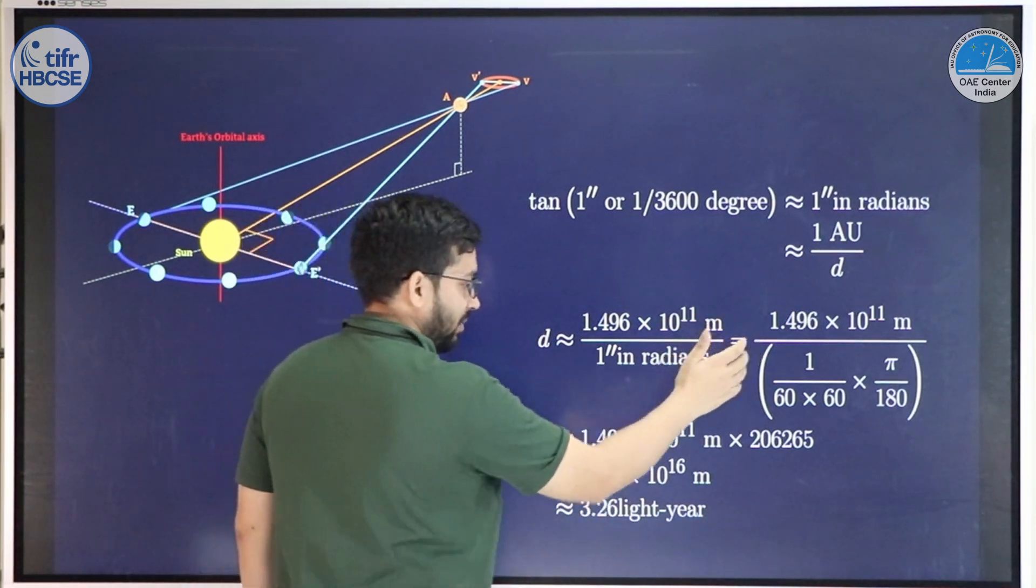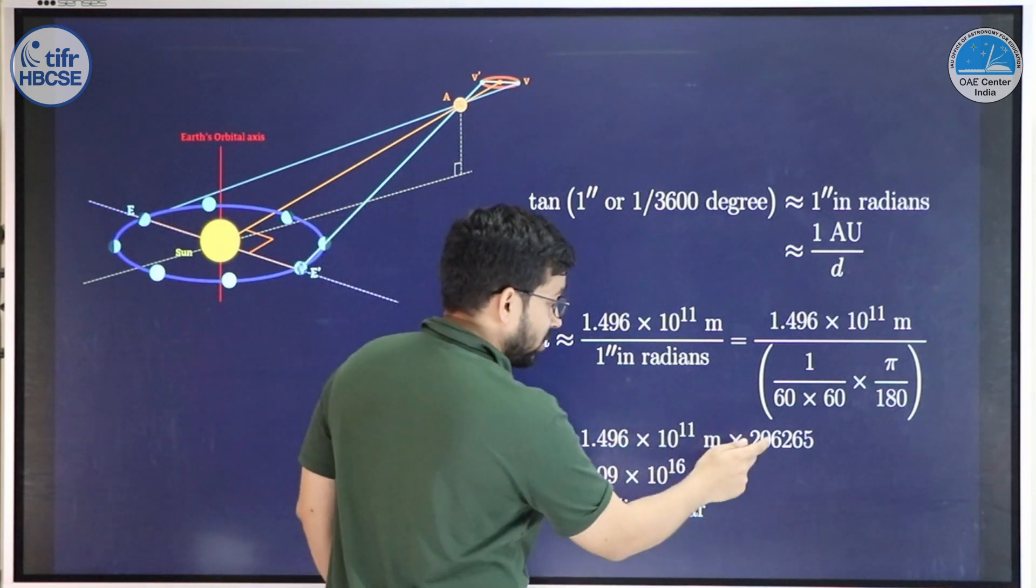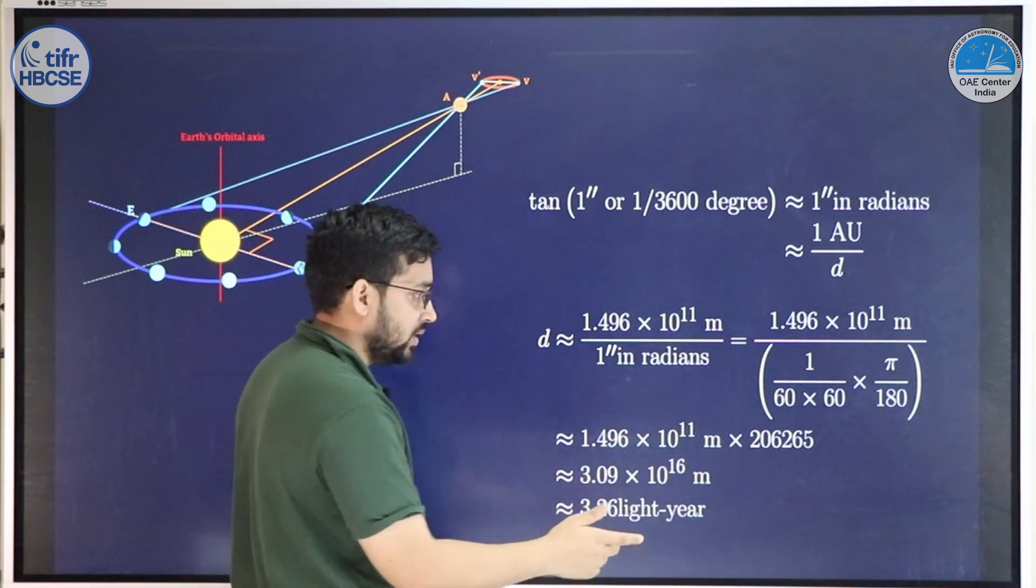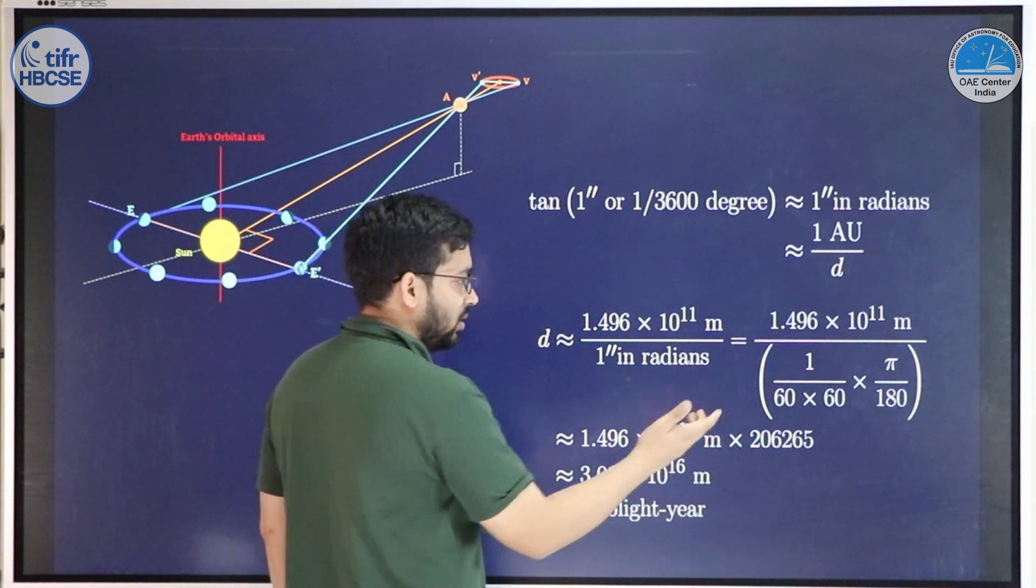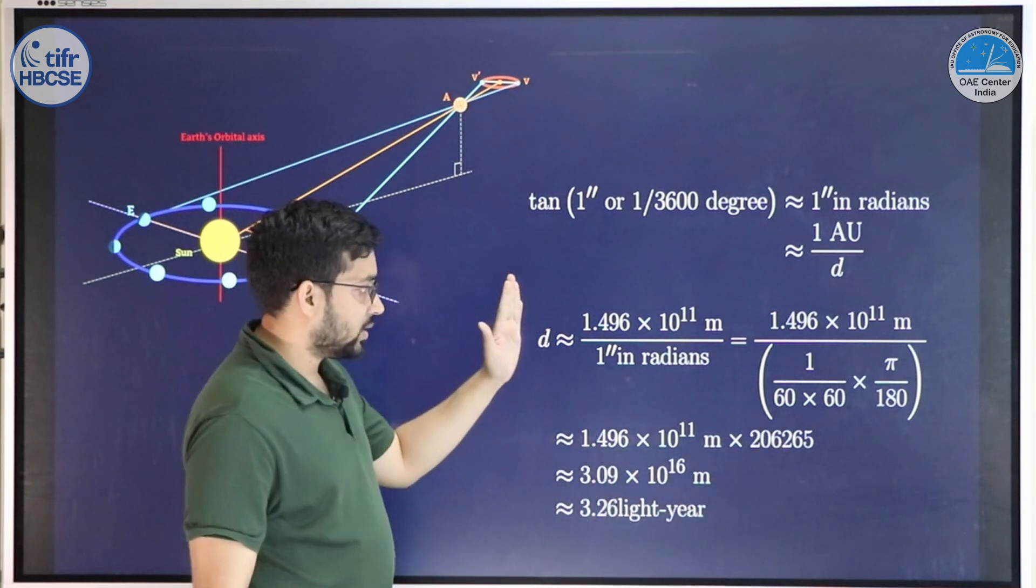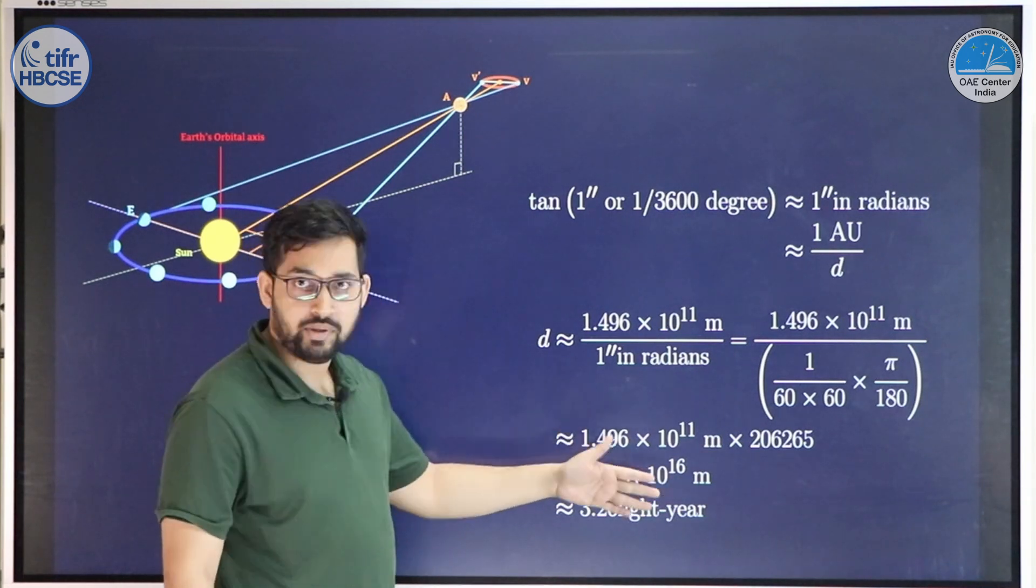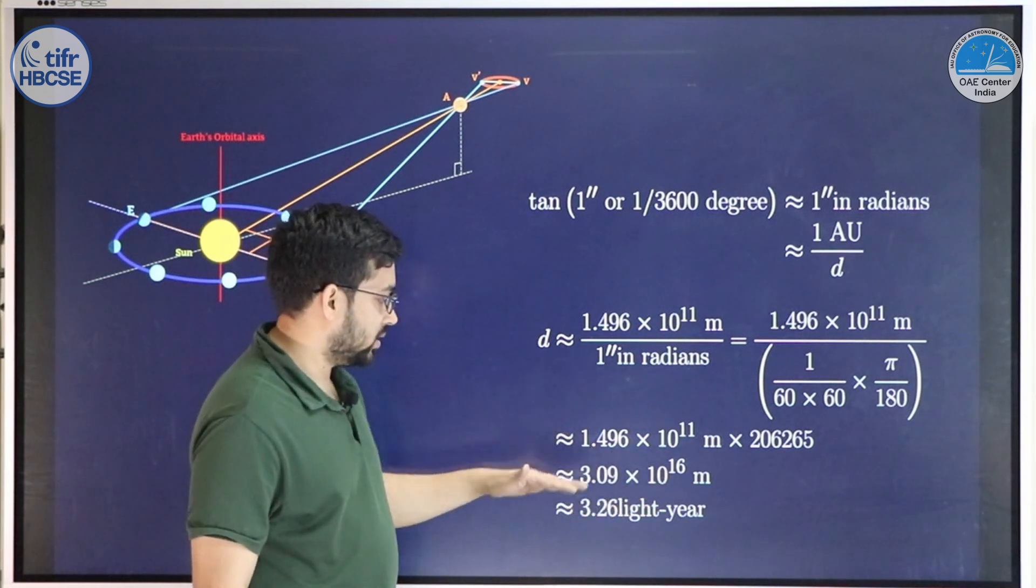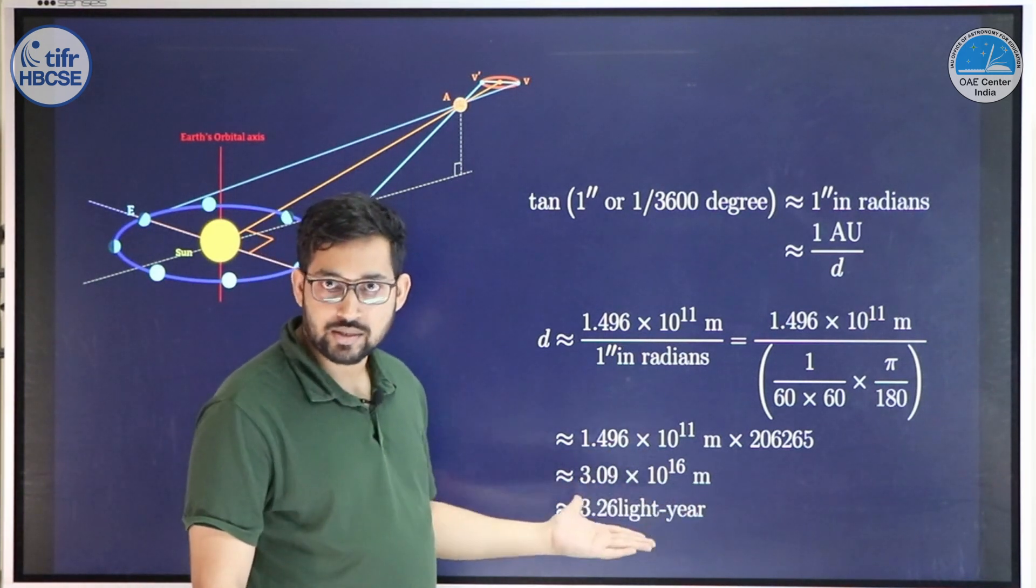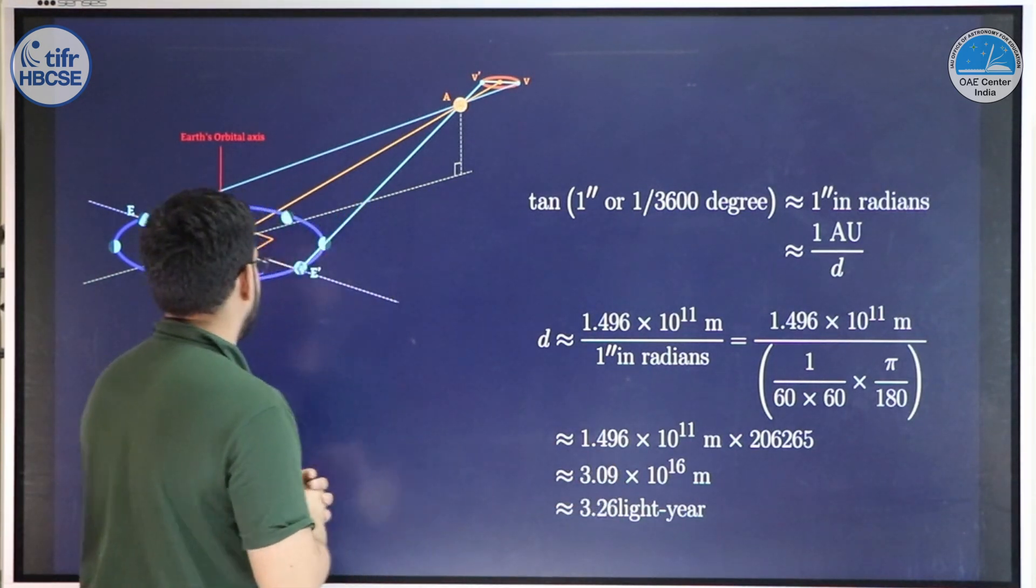Roughly, what we get: if we simplify, this distance when parallax is 1 arc second is around 200,000 AU. Roughly, this is a nice useful number to remember: 206,265. So if 1 arc second is the parallax, this many AU—or this much, 3 × 10^16 meters roughly—is what the distance would be. You can think of it as 3.26 light years. This is also a reason why we require such units, because numbers can be quite large.